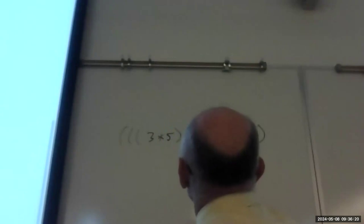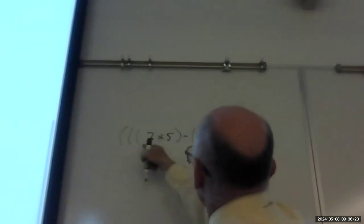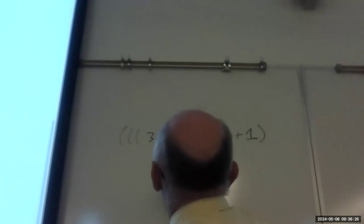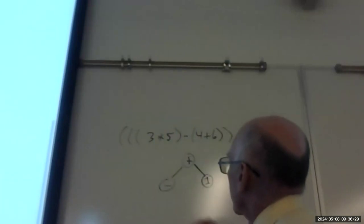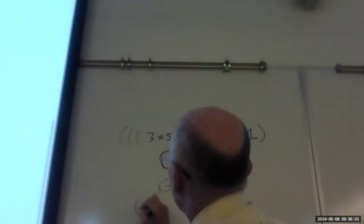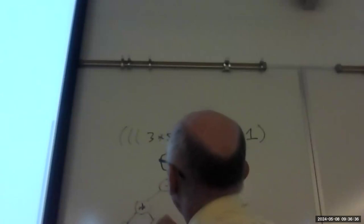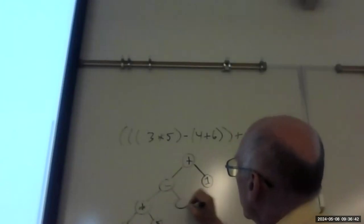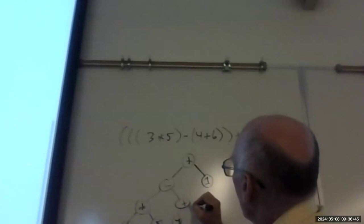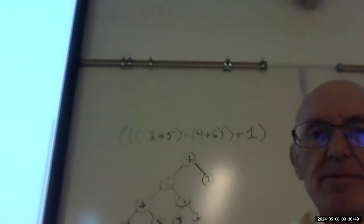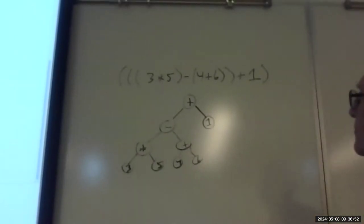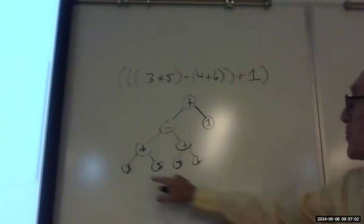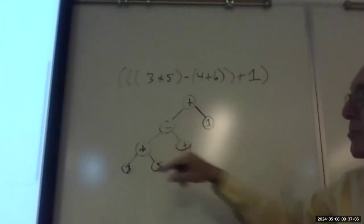What does the tree for this look like? We're going to have an addition of one at the top. The left half has a subtraction in the middle, with times-three-and-five on the left and addition-of-four-and-six on the right. Notice something special about the numbers compared to the operators — what do you see? What do all the operator nodes have that the number nodes don't?